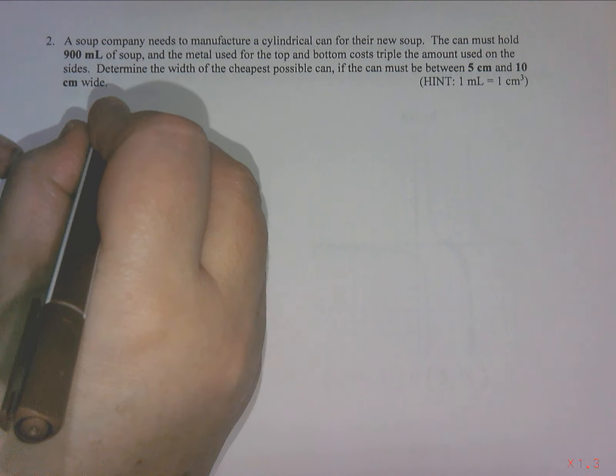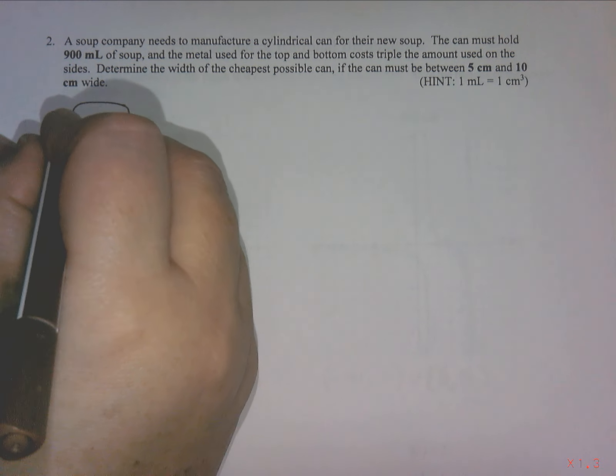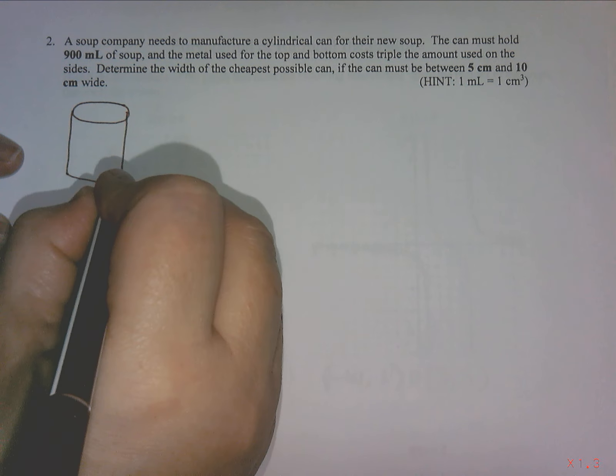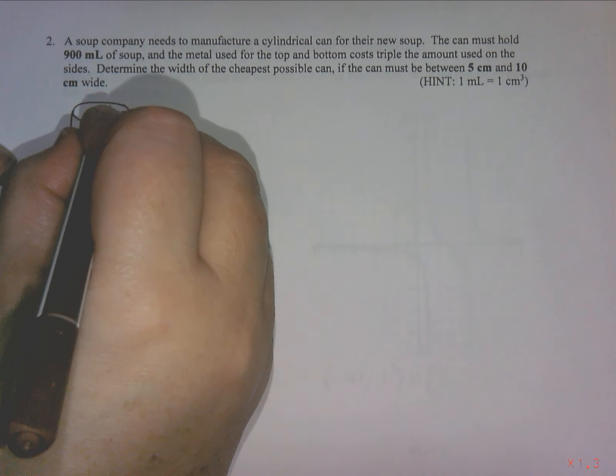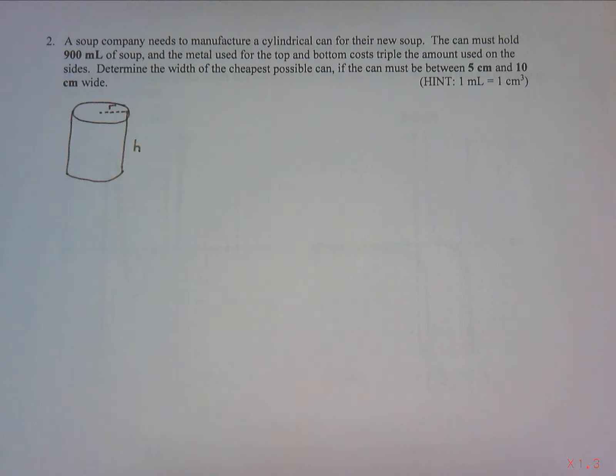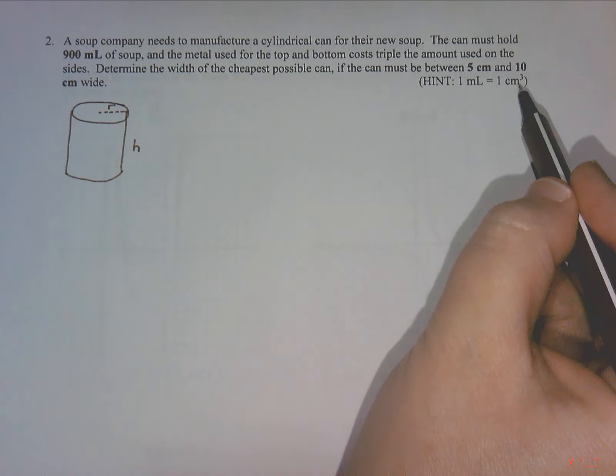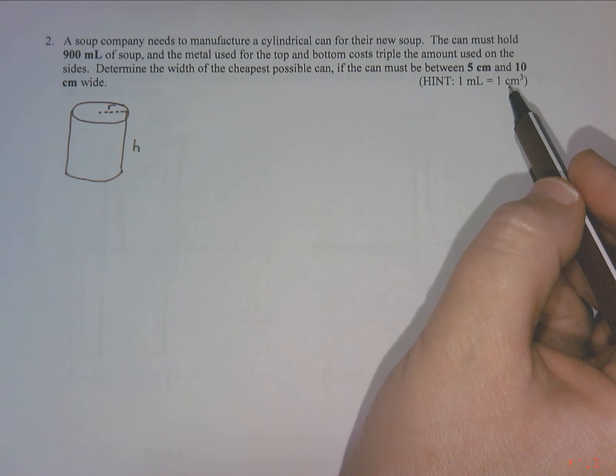Determine the width of the cheapest possible can if the can must be between 5 cm and 10 cm wide, and 1 milliliter is 1 cm cubed. So I have a cylindrical can with a radius and a height. We know it needs to hold 900 milliliters of soup, which is really 900 cm cubed.